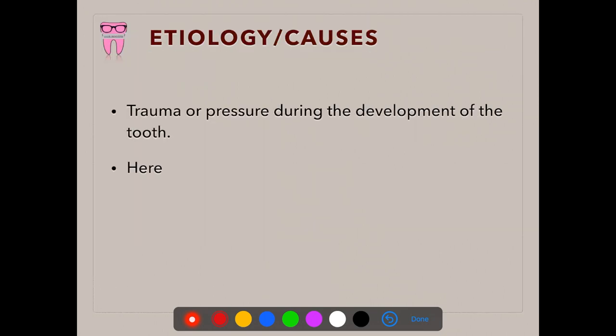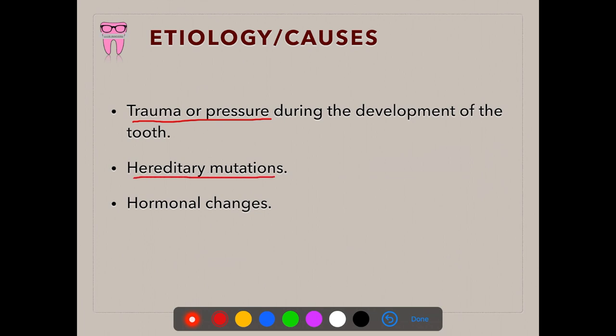Let's look into the causes of developmental disturbances affecting the shape of the teeth. The first and most important cause is trauma or pressure — trauma due to an external physical force, and pressure due to internal eruptive forces during the development of the teeth. The second cause is hereditary mutations, and the last cause is hormonal changes due to endocrine dysfunction.